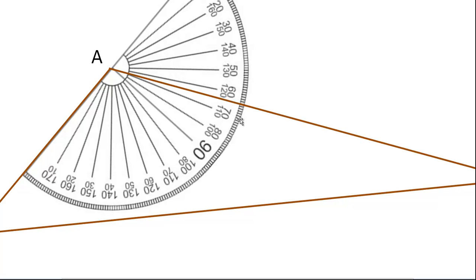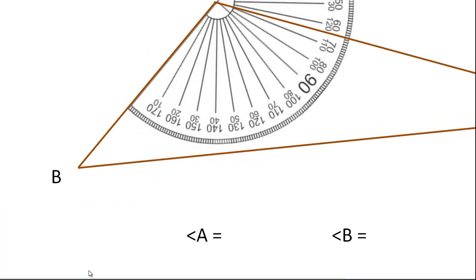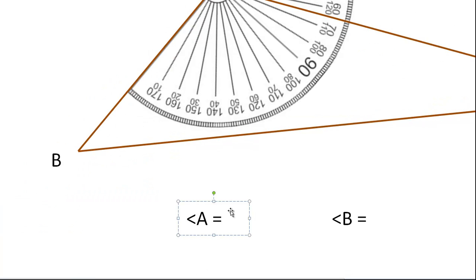So I'm measuring from this side. So I'm going to use the inside scale here. So you see, it's between the 110 and 120. So that would be 110, 11, 12, 13, 14, 15, about 116 degrees. So angle A is about 116.